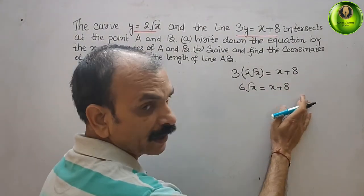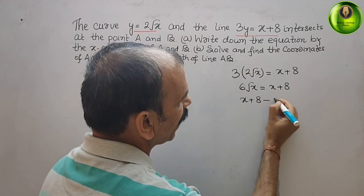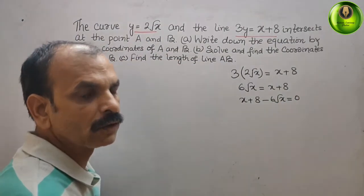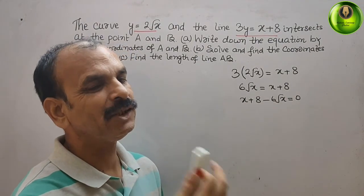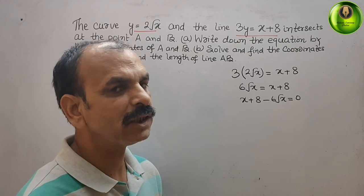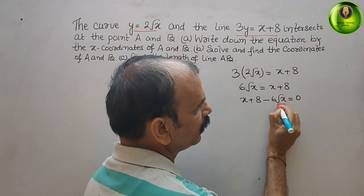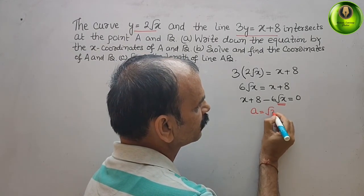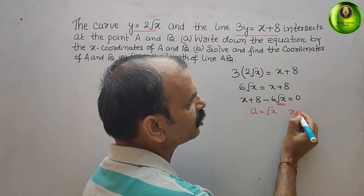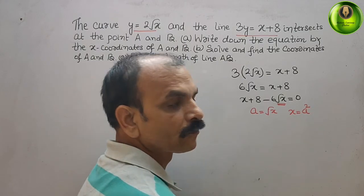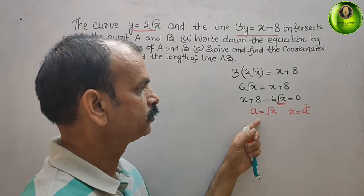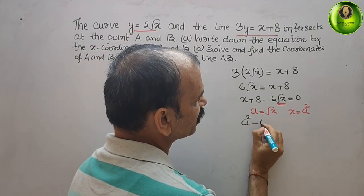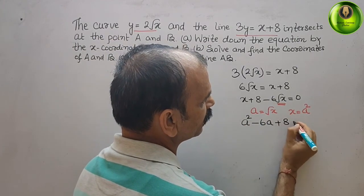Bring everything to one side: x plus 8 minus 6 root x equals 0. Now we reduce it by letting a equal root x, so x equals a squared. Substituting these values gives us a squared minus 6a plus 8 equals 0.